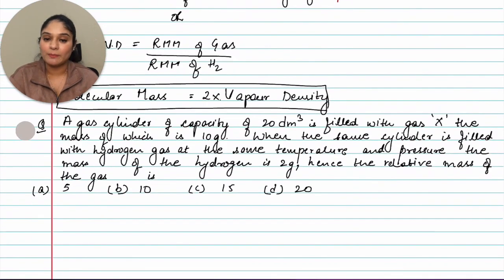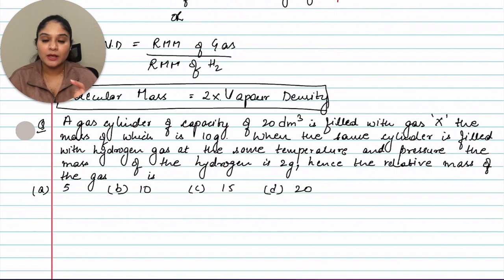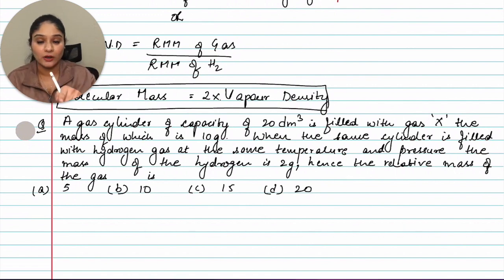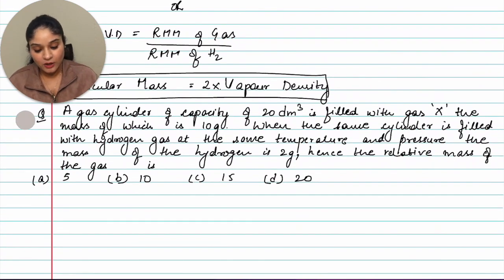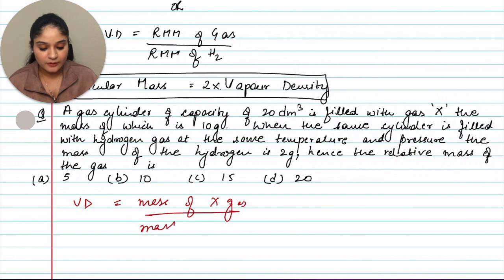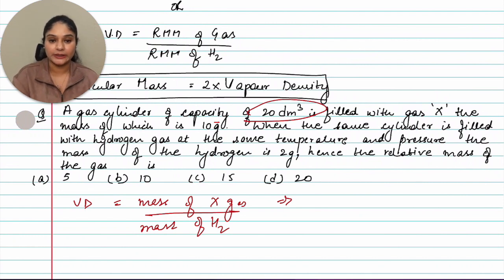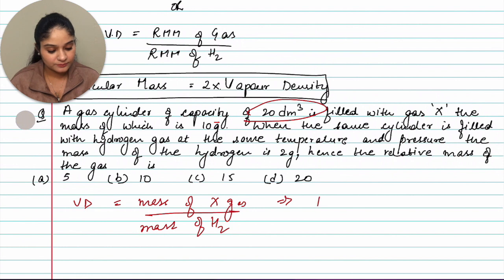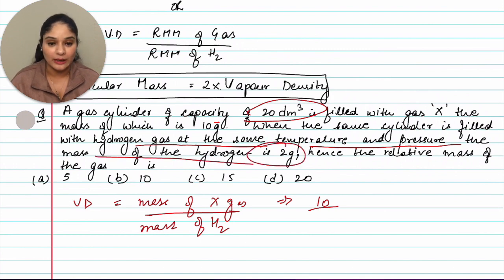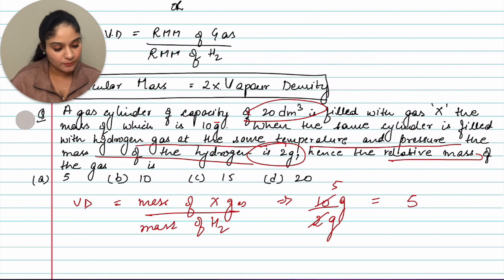Question: a gas cylinder of capacity 20 dm³ is filled with gas X, the mass of which is 10 grams. When the same cylinder is filled with hydrogen, the mass of hydrogen is 2 grams. So vapor density = mass of gas X ÷ mass of hydrogen = 10 ÷ 2 = 5.